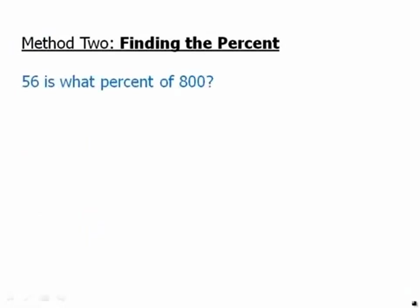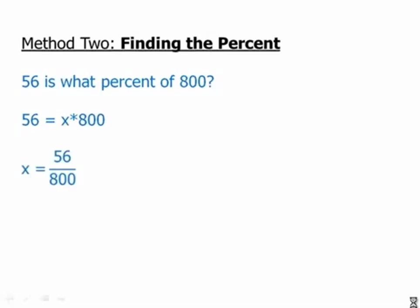The second way to use this is in questions where we have to find the percent. So: fifty-six is what percent of eight hundred? We set things up: fifty-six equals x times eight hundred. We divide out and can cancel the factor of eight, giving us seven over one hundred, which is 0.07. That's a multiplier, which corresponds to seven percent.